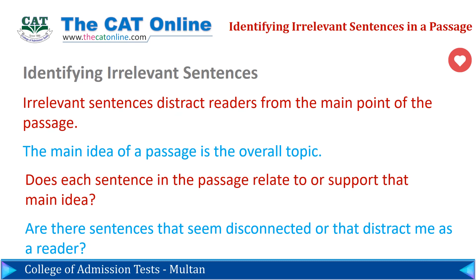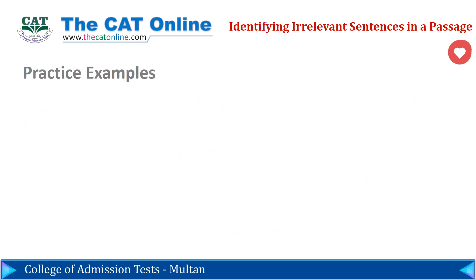Asking yourself about distracting sentences and those that seem out of place is a solid step toward identifying irrelevant sentences in a passage. Now that we've learned what irrelevant sentences are and how to identify them in a passage, let's practice doing so.